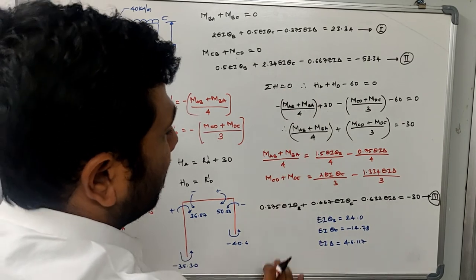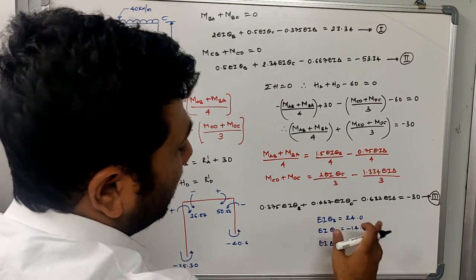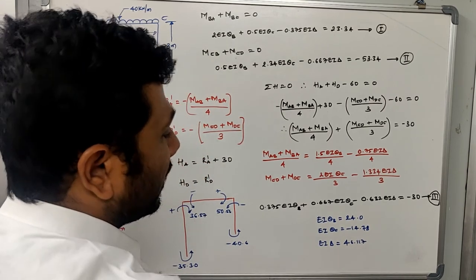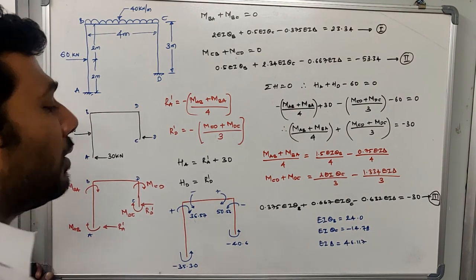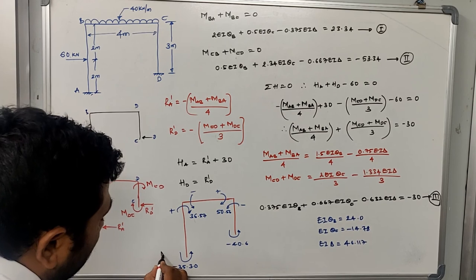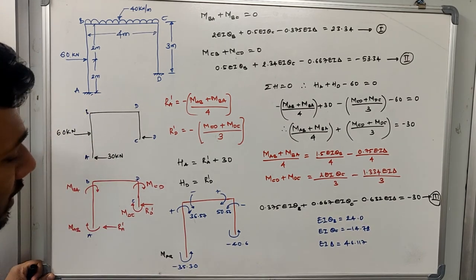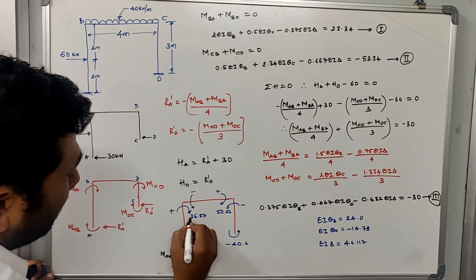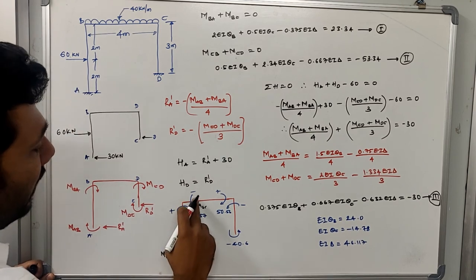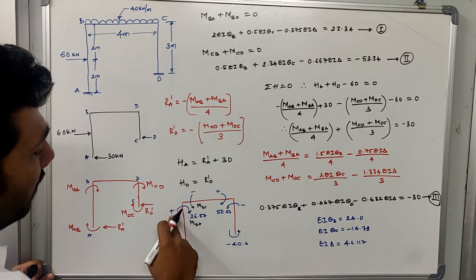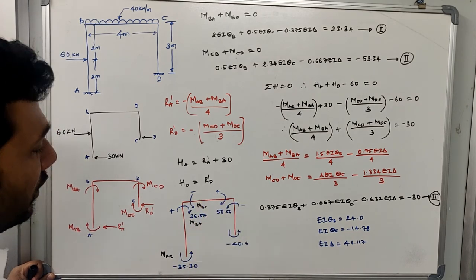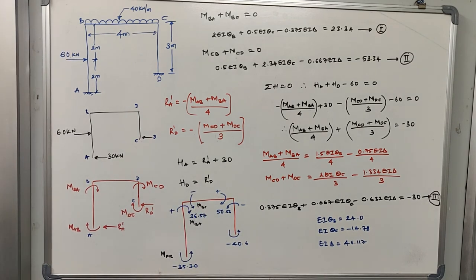Solving the three equations simultaneously: EI·θ_B = 24, EI·θ_C = −14.78, EI·Δ = 46.117. Substituting these back into the slope deflection equations gives the end moments: M_AB = −35.3 kN·m. At joint B, M_BA and M_BC are equal in magnitude (36.57) with opposite signs. M_CB, M_CD, and M_DC are similarly calculated.